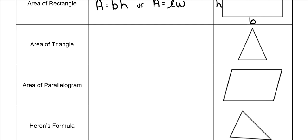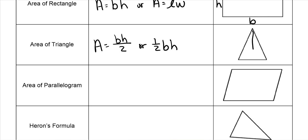The area of a triangle can be written two different ways: it's either base times height divided by two, or half the base times the height. I typically do half the base times height because that's just the way I learned it. The height will always be perpendicular to the side — the height is the vertical piece, and then the base would be at the bottom.